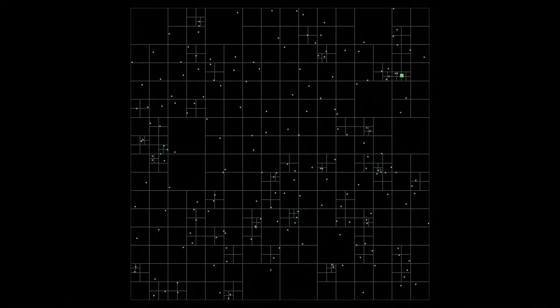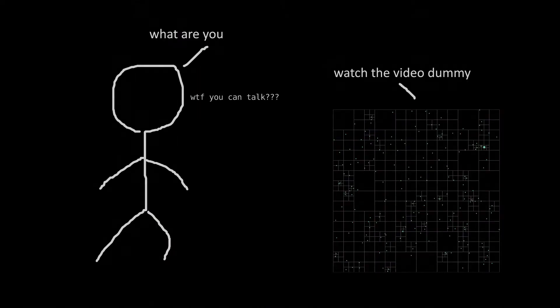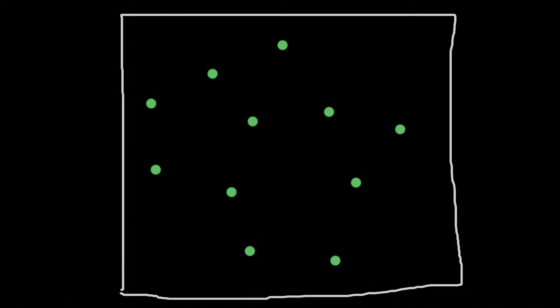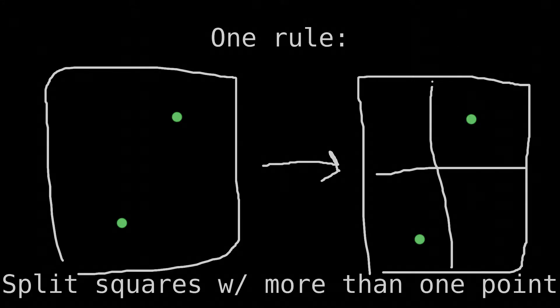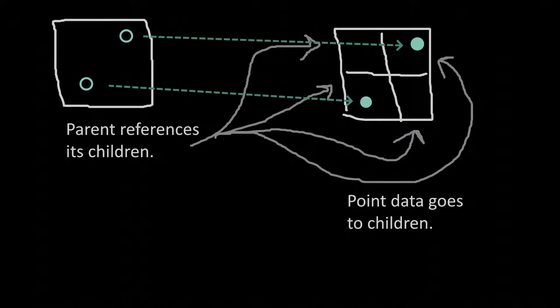Quadtrees allow us to eliminate large areas containing points which are obviously not in the circle. We start with a bunch of points on a 2D plane inside a square in which all the points reside. We only have one rule: if a square contains more than one point, it is to be split into four smaller, equally sized squares. The big square is the parent square and its four smaller ones are the child squares. Data-wise, the parent square contains references to its children, and points the parent stored are now stored in the child containing them. Let's add the points to the quadtree one by one following this rule.